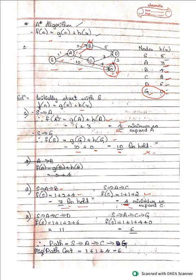Keep S→A→B on hold and expand S→A→C. From C you can reach D and G. For S→A→C→D: 1 + 1 + 3 + h(D) = 1 + 1 + 3 + 6 = 11. For S→A→C→G: 1 + 1 + 4 + h(G) = 1 + 1 + 4 + 0 = 6.